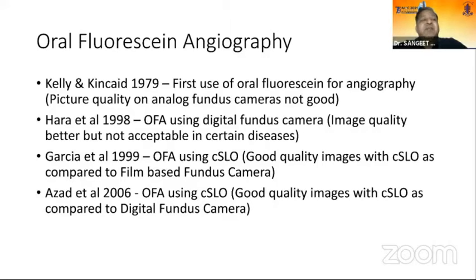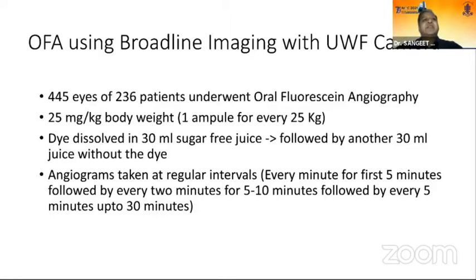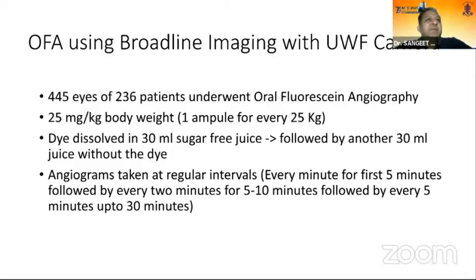Another procedure increasingly used is oral fluorescein angiography, reported as early as 1979, which gives good quality images with recent cameras. You give the oral dye at 25 mg per kg body weight, dissolved in 30 ml of sugar-free juice followed by another 30 ml of juice, then angiograms are taken at regular intervals. It has its own limitations but is another option some can follow.